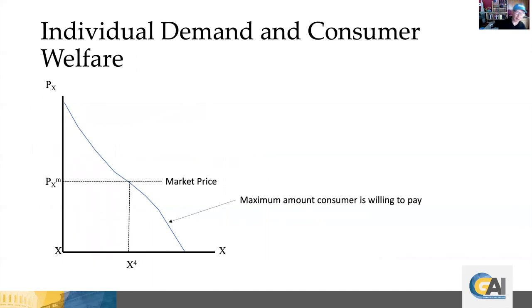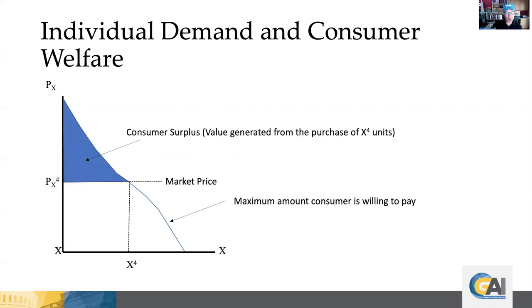If we think about a market price for beer, and put that on the graph, we'd end up buying X4 units of beer at the market price PM. And the blue shaded area is the individual's consumer surplus from that transaction of buying beer, buying X4 units of beer at PX4, or the market price. And this blue shaded area, or consumer surplus, is the value generated from the purchase of those units.